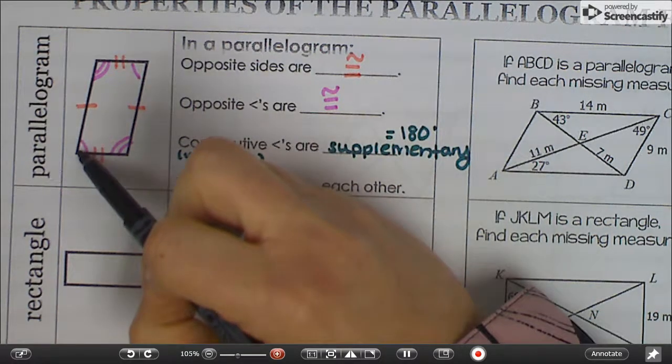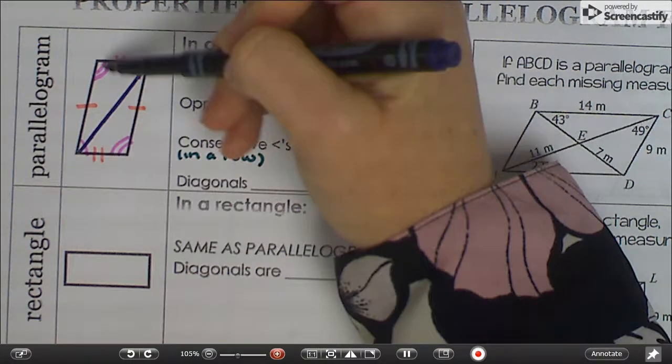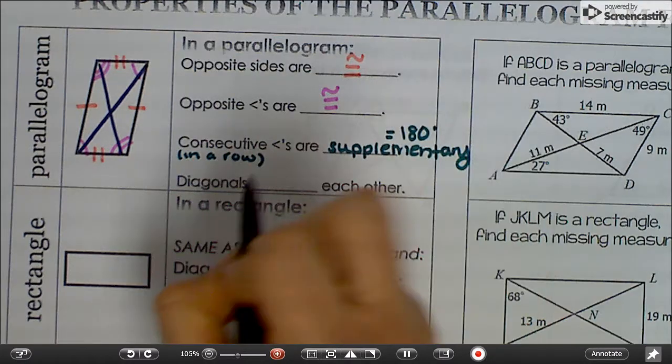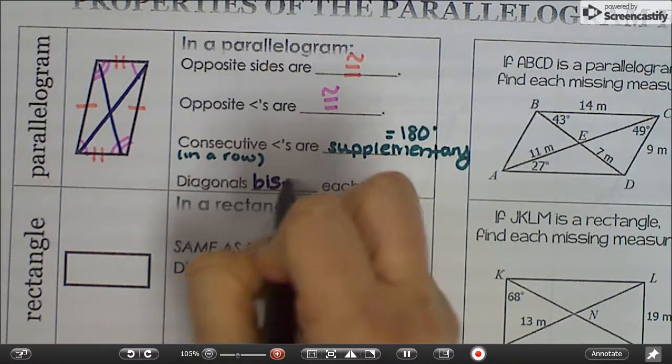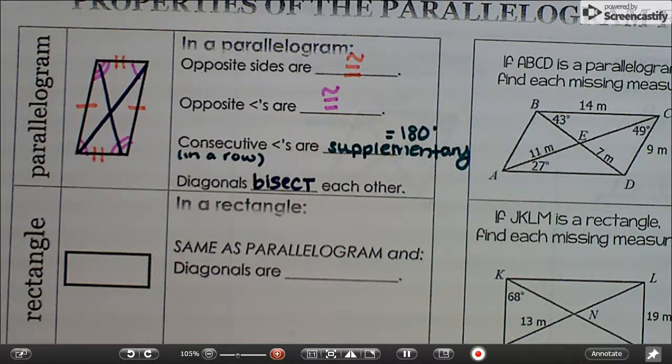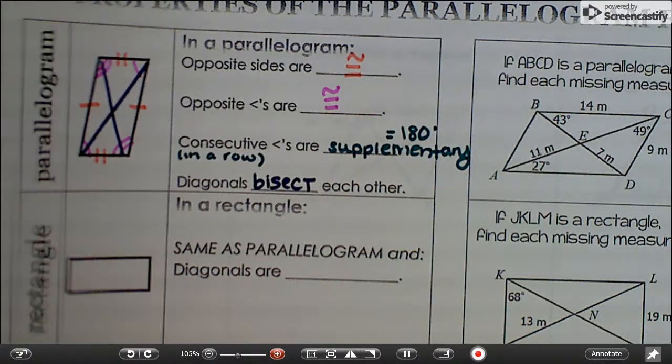Diagonals go from one vertex to another. These are diagonals. And in a parallelogram, diagonals bisect each other. So those are the basic properties of a parallelogram, and I'm going to show you how it works over here in this example.